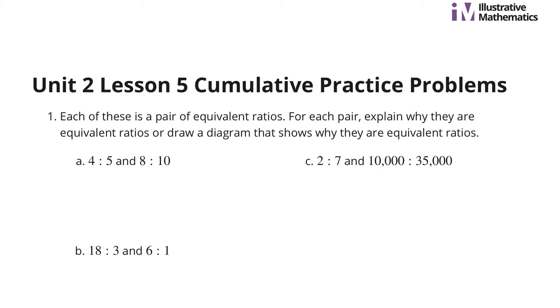In number 1, each of these is a pair of equivalent ratios. For each pair, explain why they are equivalent ratios, or draw a diagram that shows why they are equivalent ratios. Well, if I look from 4 to 5 and 8 to 10, from 4 to 8, I'm multiplying by 2, and from 5 to 10, I'm multiplying by 2. So, since we're multiplying by the same number, we're just doubling the ratio, and so that's why it's equivalent.